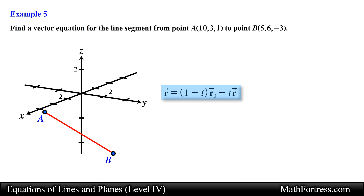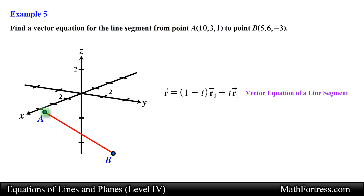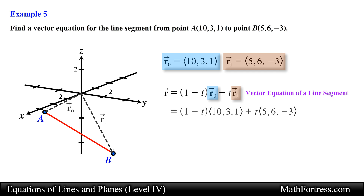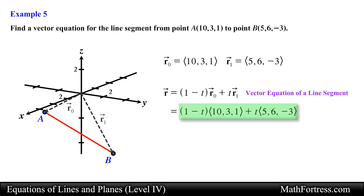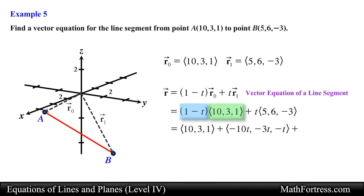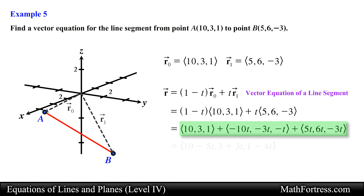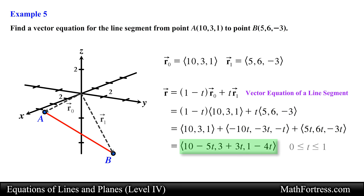The vector equation of a line segment is written as follows, where vector R₀ represents the position vector of one endpoint and vector R₁ represents the position vector of the other endpoint. We use the coordinates of point A for vector R₀ and coordinates of point B for vector R₁. Substituting these into the equation, we multiply vector R₀ by the quantity (1 minus t) and multiply t with vector R₁, then add the vectors component-wise. We obtain the final vector equation where the parameter t is defined between 0 and 1 inclusive.